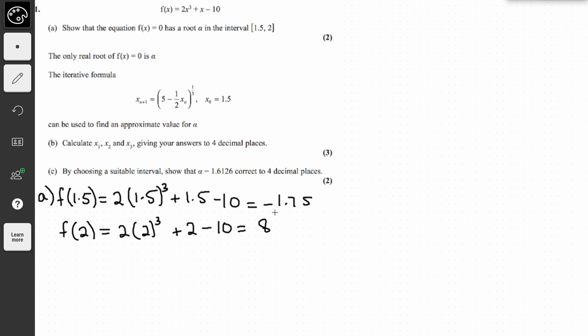So as you can see, there is a change in sign. This value is negative and this one is positive, which means that a root lies in the interval. So we can just write down that since there is a change in sign of f(x), therefore a root lies in the interval [1.5, 2].